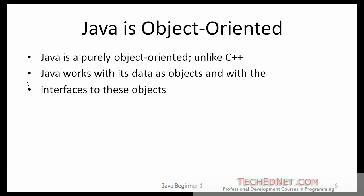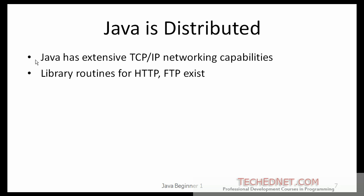Java is object-oriented. Java is a purely object-oriented programming language, unlike C++, which only supports object-orientation. Java is also considered a distributed programming language. It has extensive support for TCP/IP and networking capabilities, and it also contains library routines for HTTP and FTP protocols.